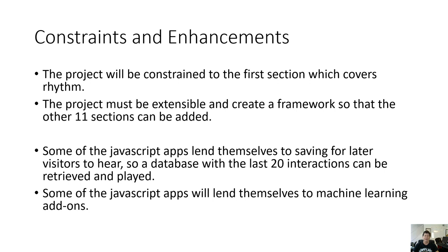Some of the JavaScript apps lend themselves to saving for later visitors to hear. So I might experiment with a concept and want to save it for later people to hear what I've done. If I choose to save, it'll go to a database on the internet and then we'll offer a list of the last 10 or 20 submissions, so I can hear what other people have done and created based on these concepts. Even more importantly, some of the JavaScript apps will lend themselves to machine learning add-ons, so we can take it from the 1940s to the 2020s.